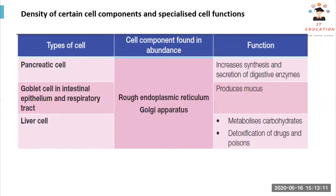Pancreatic cells, goblet cells in the intestinal epithelium and respiratory tract, and liver cells are all able to synthesize or produce something. For example, the pancreas produces insulin, which is important for lowering blood sugar levels. Goblet cells need a lot of RER and Golgi apparatus to produce mucus. Liver cells also have a lot of RER and Golgi apparatus to metabolize carbohydrates and detoxify drugs and poisons — our liver is essentially a detox organ.